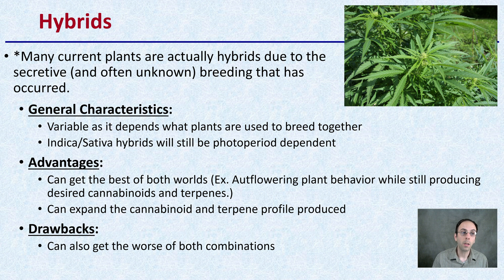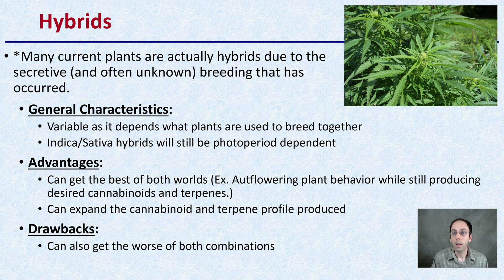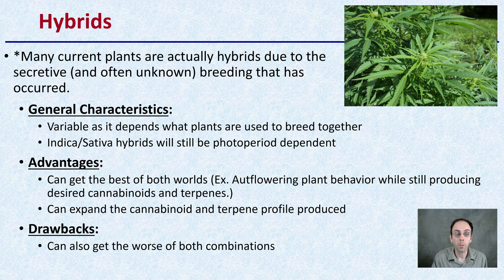We also have hybrids. Many current plants are actually hybrids due to secretive and often unknown breeding that has occurred. The general characteristics are variable depending on which plants were used and in what percentage — it might be a 50-50 sativa-indica split, or favor one over the other. Advantages are the best of both worlds — potentially autoflowering behavior with desired cannabinoids and terpenes, and expanded chemical profiles. The drawback is you could also get the worst of both combinations, and some time and refinement in breeding is needed.